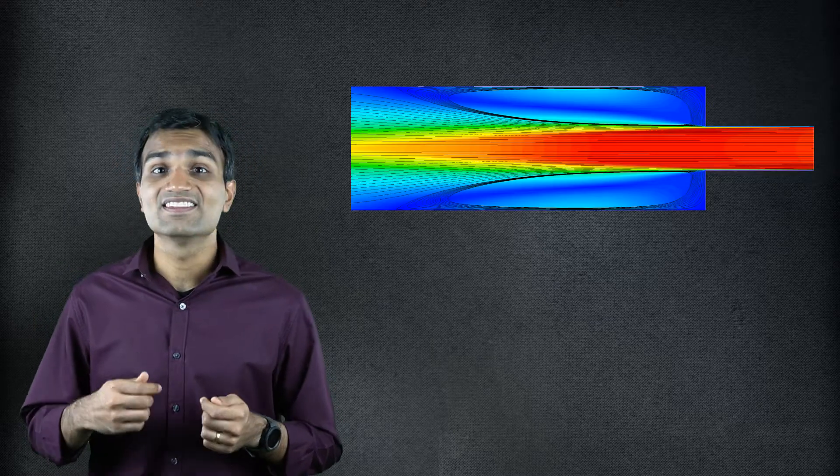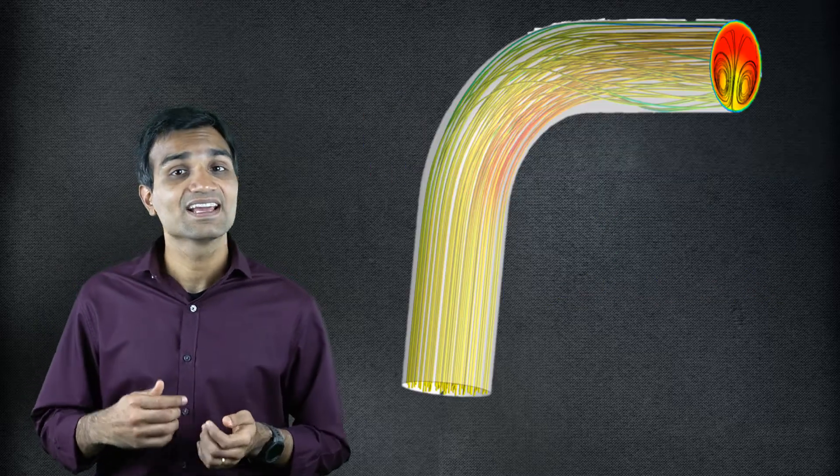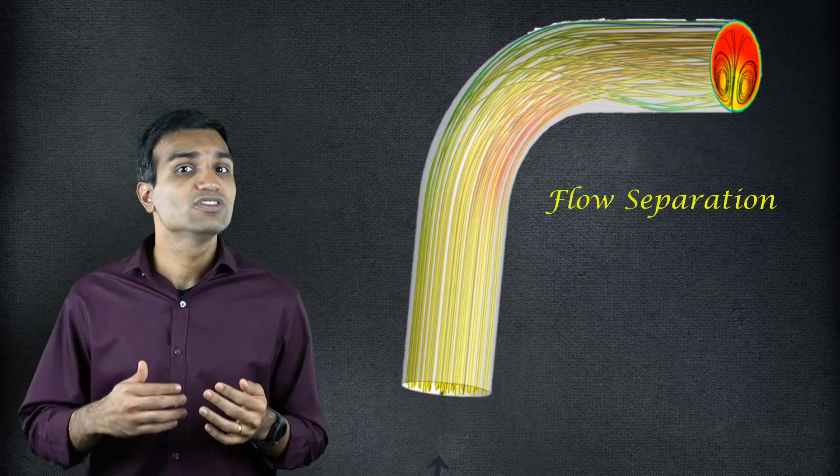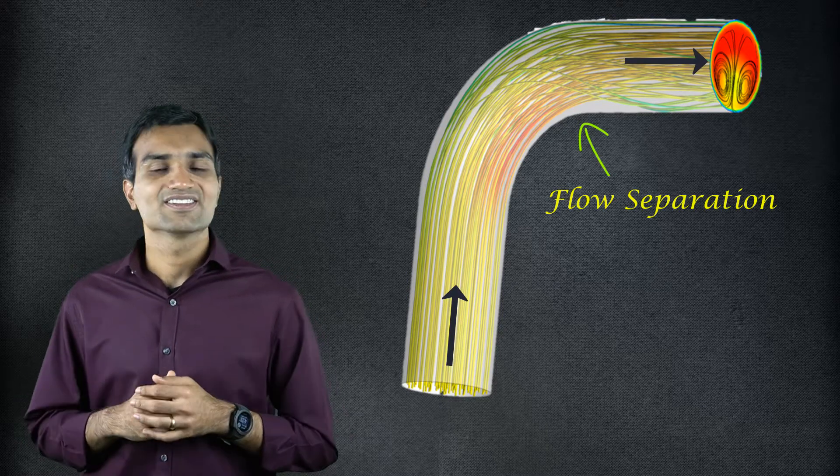In wall bounded internal flows, when the fluid flow is expanding along a pipe or when it is taking a 90 degree turn around the corner of an elbow, we see flow separation. The physics responsible for this phenomenon is the same for both internal and external flows. And in this lesson, we will learn about flow separation and its consequences.